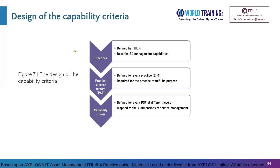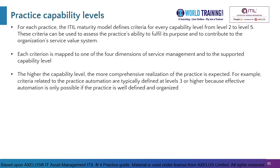This picture shows how the overall capability criteria are designed. There are 34 practices in ITIL, and each practice has two to four practice success factors, or PSFs, which are required for the practice to fulfill its purpose. The capability criteria are defined for each PSF and mapped to the four dimensions of service management. For each practice, the ITIL maturity model defines criteria for every capability level from Level 2 to Level 5, which can be used to assess the practice's ability to fulfill its purpose and contribute to the service value system of the organization.